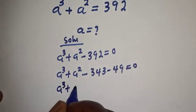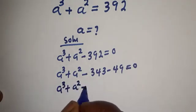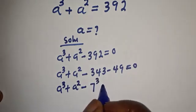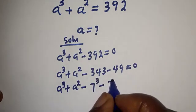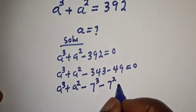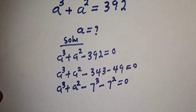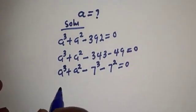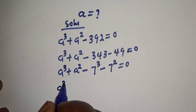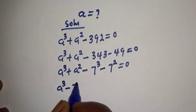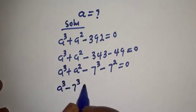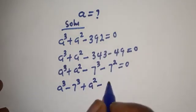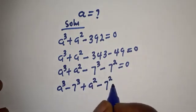This is a raised to power 3 plus a squared minus 7 raised to power 3 minus 7 squared is equal to zero. Let's regroup: a raised to power 3 minus 7 raised to power 3, plus a squared minus 7 squared, is equal to zero.